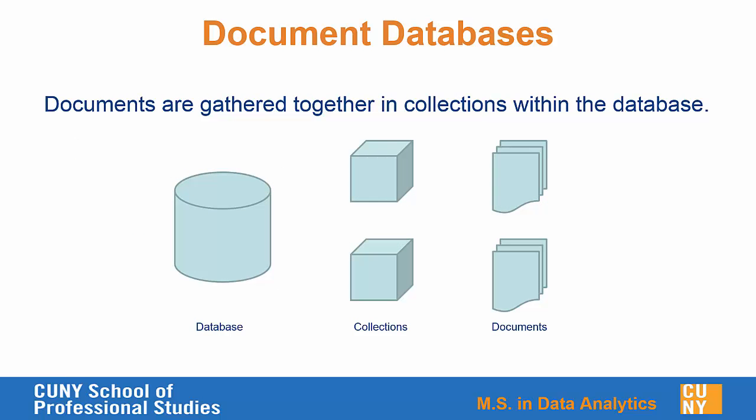Document databases are structured a little differently from SQL databases. In SQL you have your database, then tables within the database, then rows within each table. Similarly, in document databases you have your database, then what we call collections — groupings of documents — and within each collection any number of documents. You might have a books collection, a videos collection, a food product collection, or organize differently with a web store collection versus a retail store collection. That's why we say document databases are fairly unstructured and schema-less.